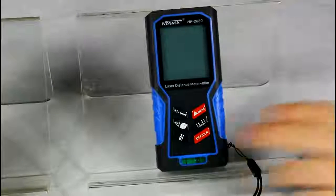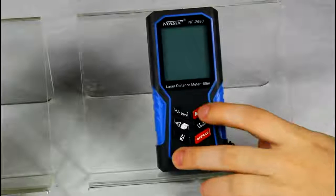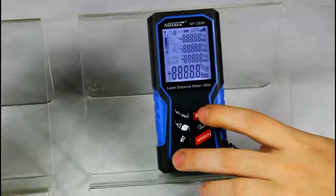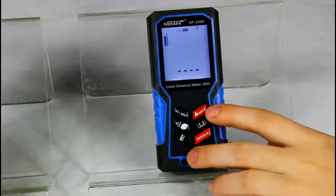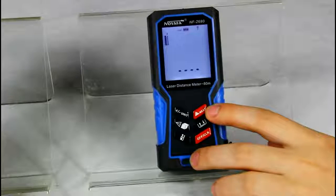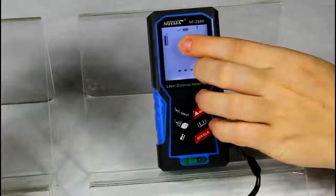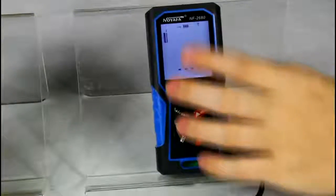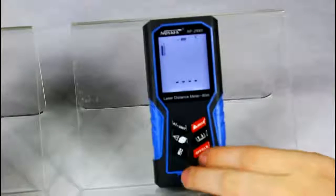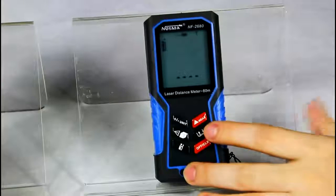First, let's press MEAS to turn on the device. This icon is the measuring benchmark. The system default is from the bottom of the device. If you want to start from the top side, press this button to shift.